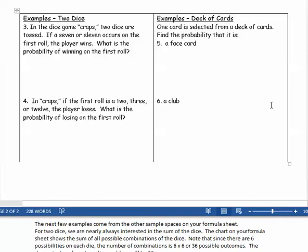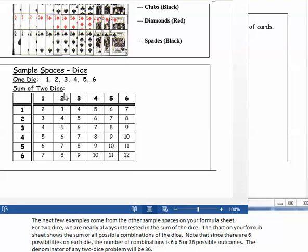The next few examples come from other sample spaces on your formula sheet: two dice and a deck of cards. Let's take a look at those. For two dice, we're nearly always interested in the sum of the dice. This chart on your formula sheet shows the sum of all possible combinations of the dice. Note that since there's six possibilities on each die, then when we make the number of combinations of the two of them, basic counting principle, we would multiply six times six and get thirty-six possible outcomes. So the denominator of any two dice problem will be thirty-six.